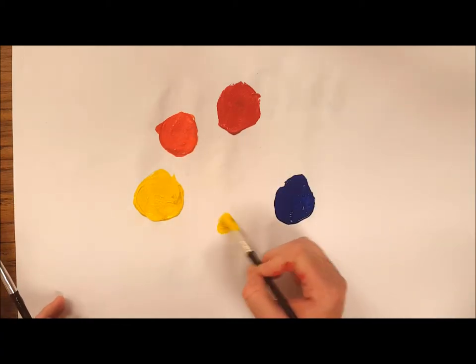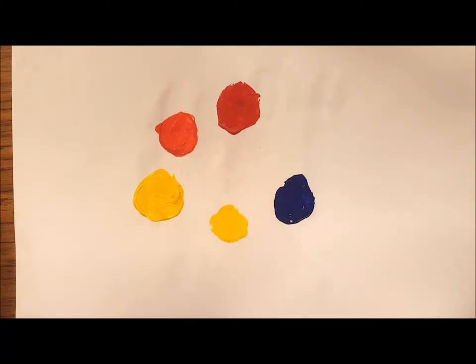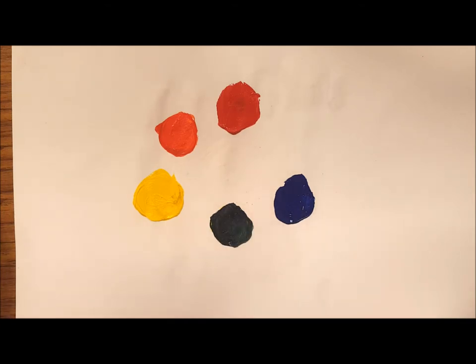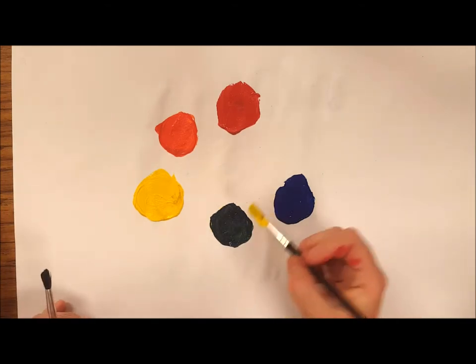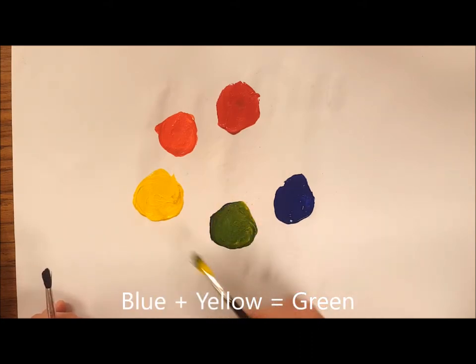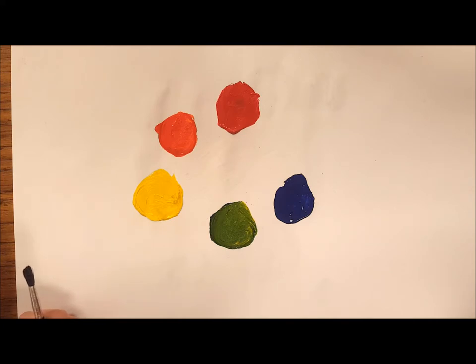Now I'm going to take yellow again and I'm going to mix it with blue. This makes green. Green is a secondary color because it's made by mixing blue and yellow, which are both primary colors.